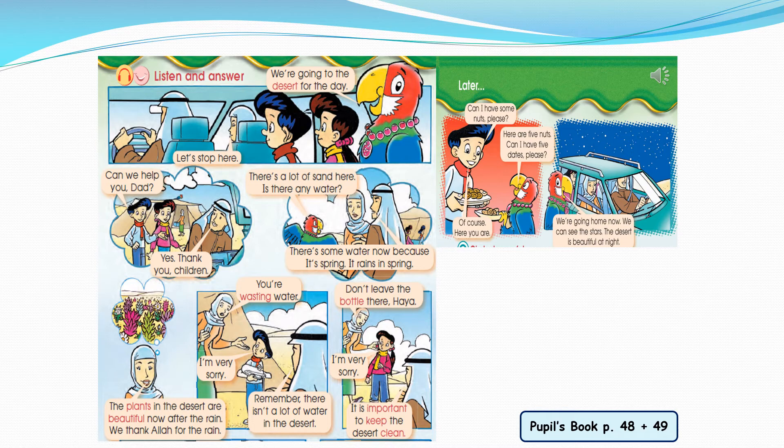Can I have some nuts please? Here are five nuts. Can I have five dates please? Of course, here you are. We are going home now. We can see the stars. The desert is beautiful at night.